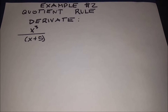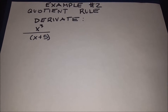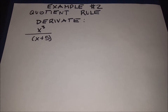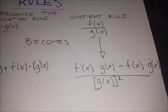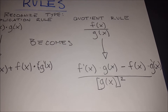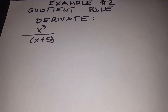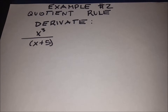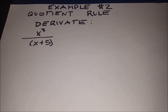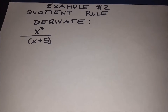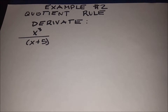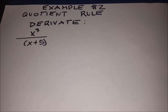Now let's move on to the quotient rule example. We have x cubed over x plus 5. Going back to the rules, we have f of x over g of x, where f of x equals x cubed and g of x equals x plus 5.